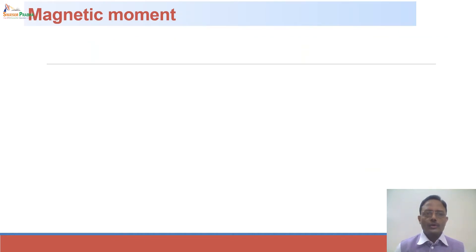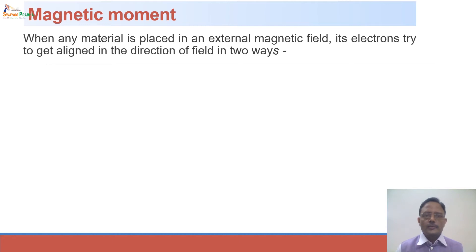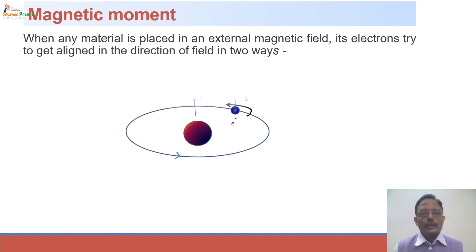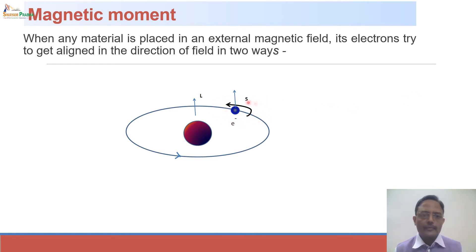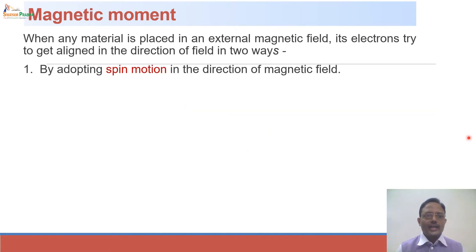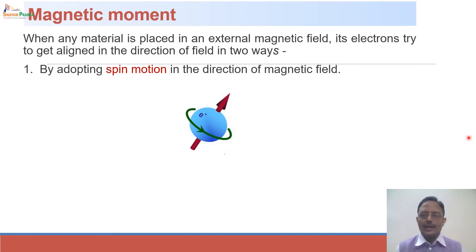The magnetic nature of a substance is measured in terms of magnetic moment. When we place a substance in an external magnetic field, electrons try to align in the direction of the field because each electron behaves as a tiny bar magnet. An electron has two types of motion: spin motion around its own axis and orbital motion around the nucleus. When placed in an external magnetic field, it tries to align both motions in the direction of the field.